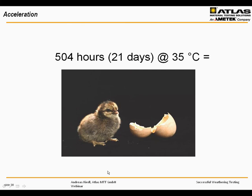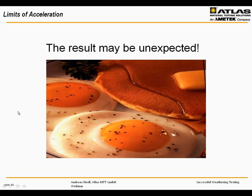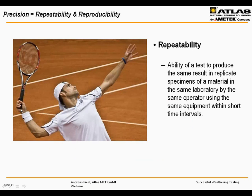Limits of acceleration exist everywhere in the weathering field because acceleration is one of the most important topics in weathering. If you can't wait 21 days at 35 degrees Celsius to produce a chicken from an egg and try to speed that up, the results can be very unexpected. This is something to laugh at, but things like that in a figurative sense happen in every day's laboratory practice.